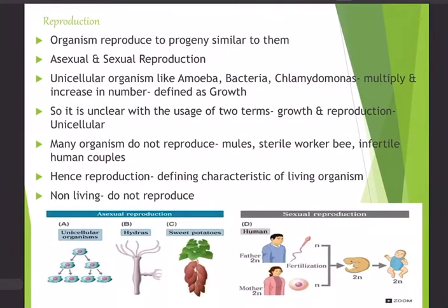The second characteristic is reproduction — an organism reproduces to produce progeny similar to itself. Reproduction is the process by which organisms produce a similar kind, ensuring continuity of the species in a given habitat. Reproduction can be asexual or sexual. In unicellular organisms like amoeba, bacteria, and Chlamydomonas, there is little difference between growth and reproduction, as growth itself is reproduction.